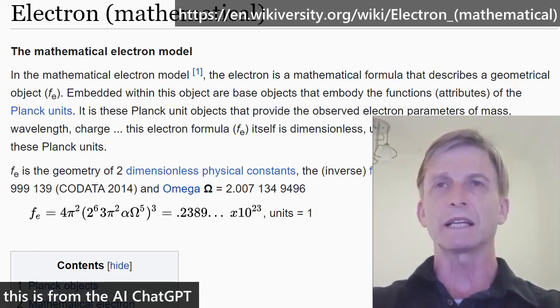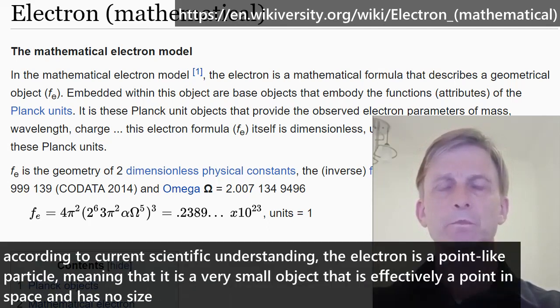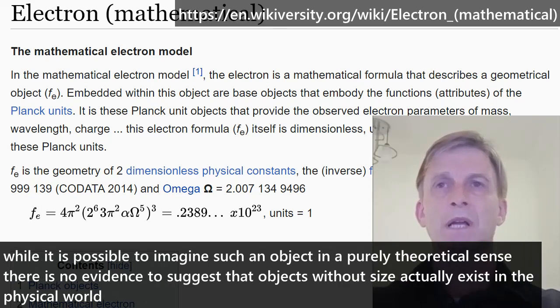This is from the AI chat GPT. According to current scientific understanding, the electron is a point-like particle, meaning that it is a very small object that is effectively a point in space and has no size. While it is possible to imagine such an object in a purely theoretical sense, there is no evidence to suggest that objects without size actually exist in the physical world.